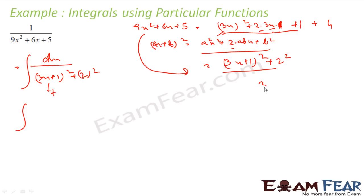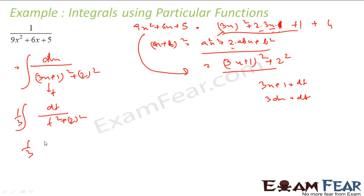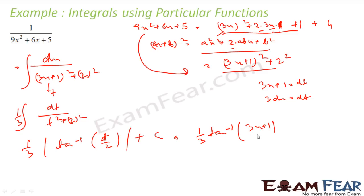So this becomes (1/3) ∫ dt / √(t² + 2²). This is nothing but (1/3) · log|t + √(t²+4)| plus constant. Substituting back, t equals 3x+1, so the answer is (1/3) · log|(3x+1) + √((3x+1)²+4)| plus constant. The main part is converting the equation into a particular function form — if I am successful in that, half of the battle is won.